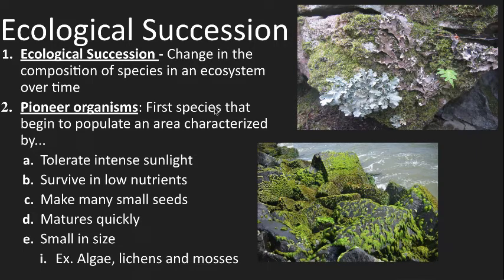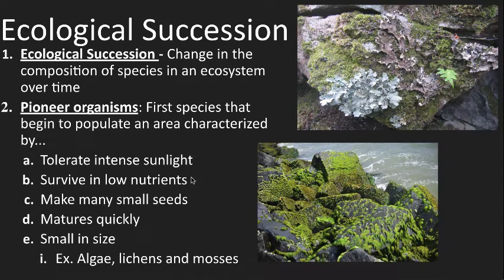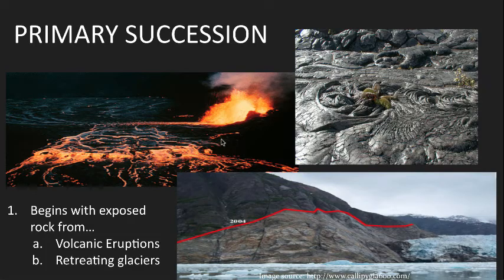Ecological succession is a process of natural ecosystem change. There are two major types: primary and secondary. Succession means a change in ecosystem over time, and the composition of components in that ecosystem will change as well. Pioneer organisms are essential — they show up first and start to colonize and form the base of living matter. They can tolerate intense sunlight, survive in low nutrients, make many small seeds, reproduce quickly, mature quickly, and are typically small in size. Things like algae, lichens, and mosses are the three organisms really able to colonize and build this foundation of life on bare rock.